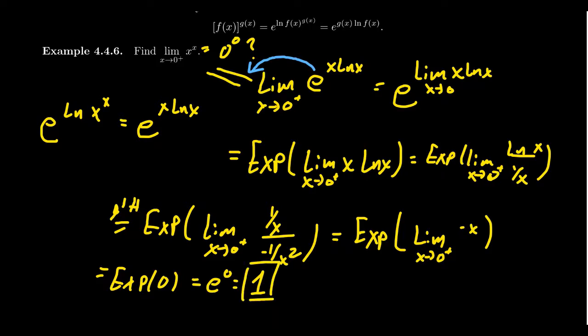So the limit as x approaches 0 from the right of x to the x equals 1. This demonstrates exactly how we compute these exponential indeterminate forms. We had three of them — 0 to the 0, infinity to the 0, and 1 to the infinity — but the calculation strategy is really identical for all of them. The approach is always the same regardless of which form you have.